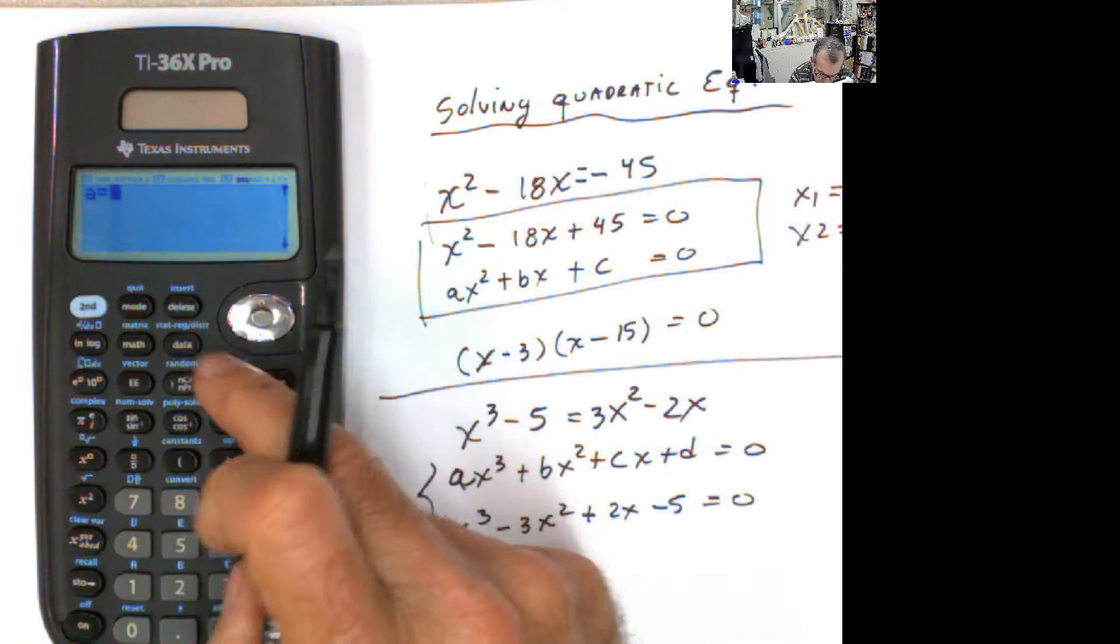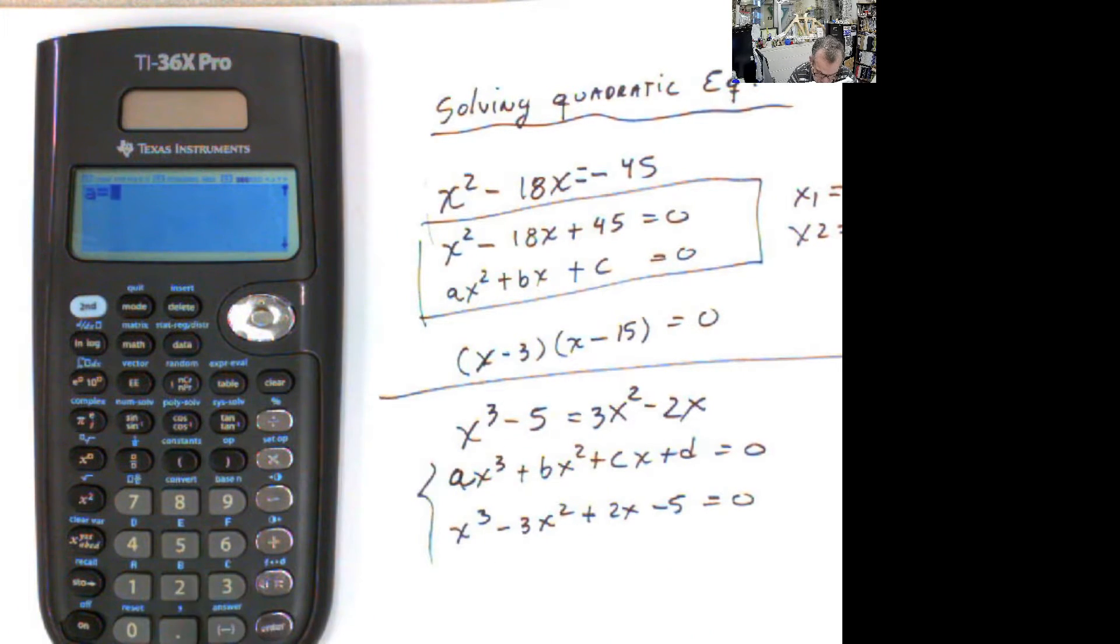And it's asking you, if you have any number there that you don't want, you can just keep clear. 1, negative 3, 2, and negative 5. And solve.